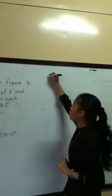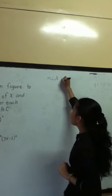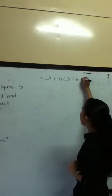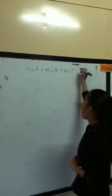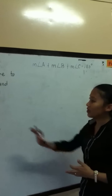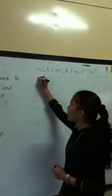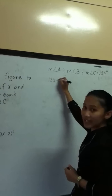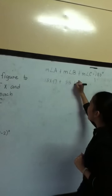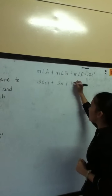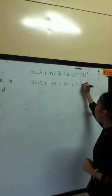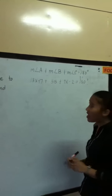The measure of angle A plus the measure of angle B plus the measure of angle C equals 180 degrees. Using substitution, we substitute the values: 13x plus 7 for angle A, 55 for angle B, and 7x minus 2 for angle C, all equal to 180 degrees.